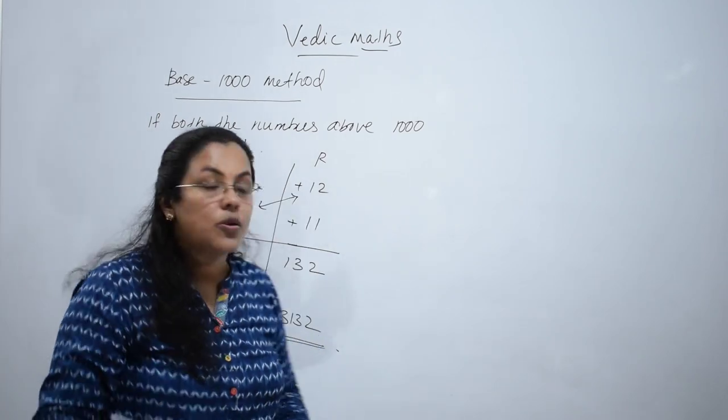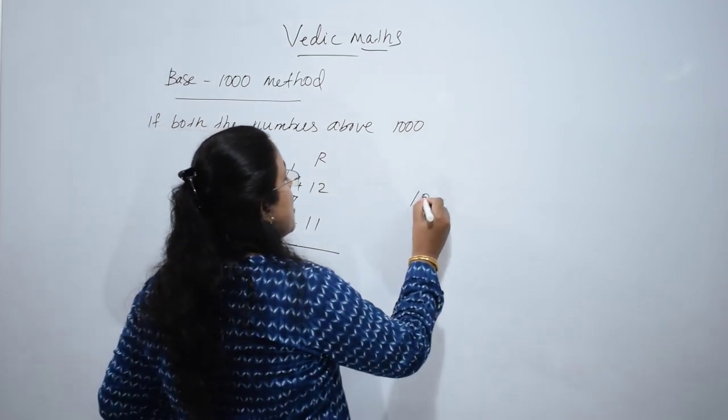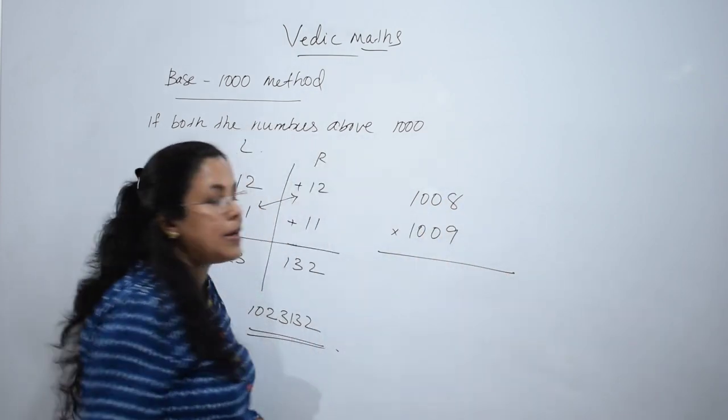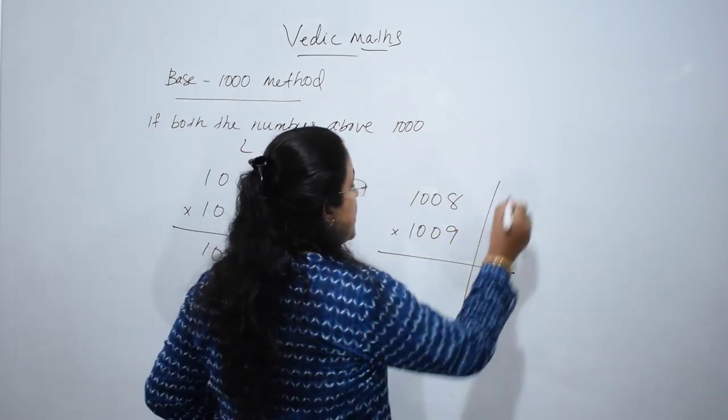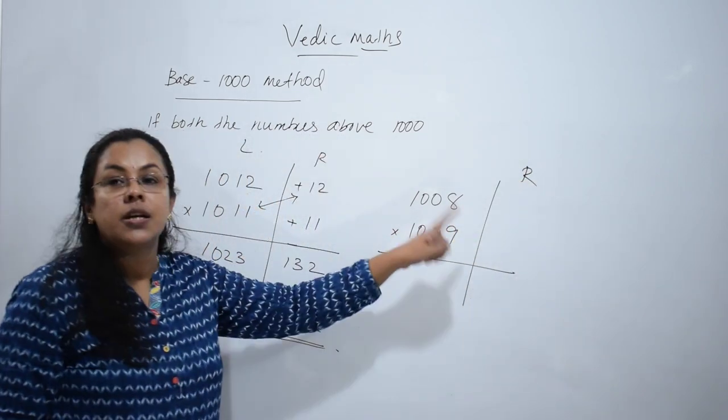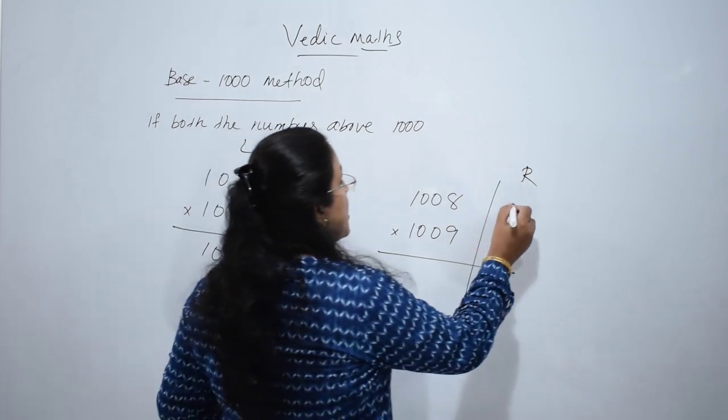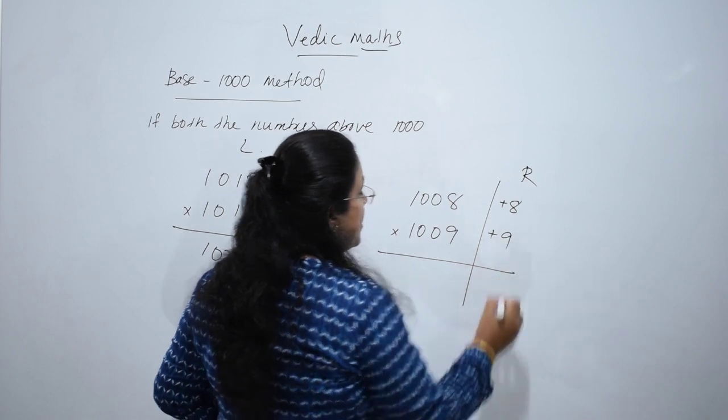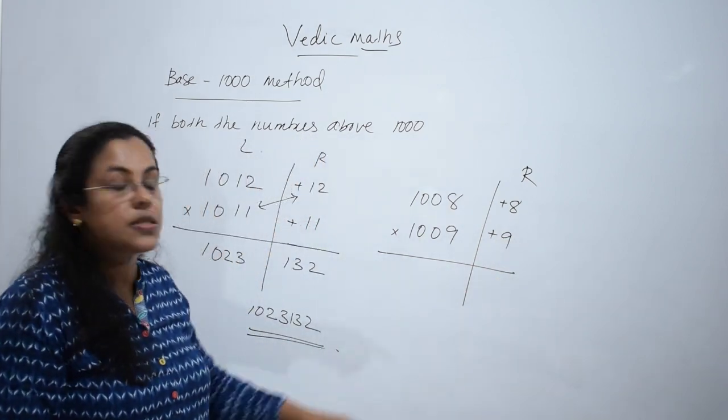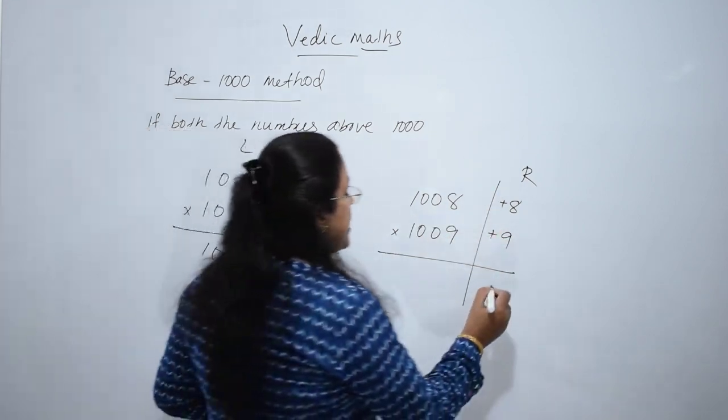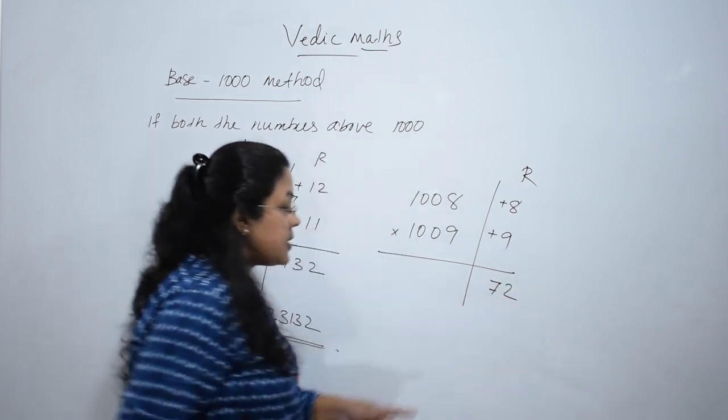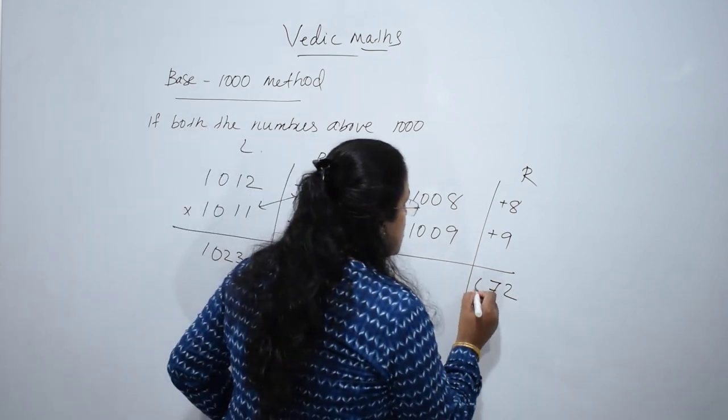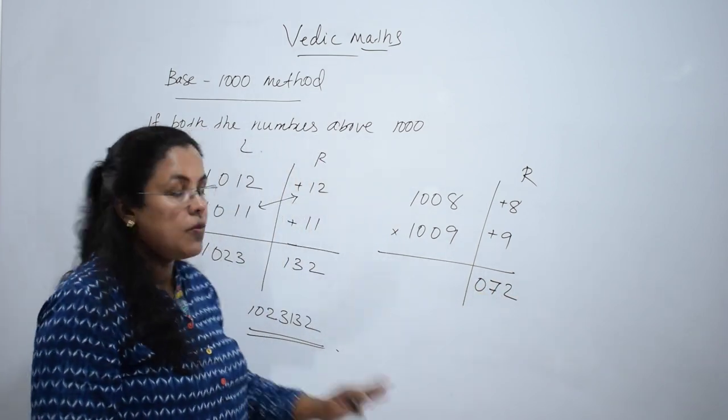Isn't it easy? One more question. Suppose it is 1008 into 1009. First of all, write the deviations from 1000. 1008 is 8 greater than 1000, and 1009 is 9 greater than 1000. Multiply 8 and 9: 8 nines are 72. Since it is base 1000 method, there must be 3 digits in the right hand side, so put 0.